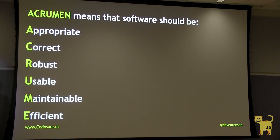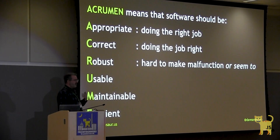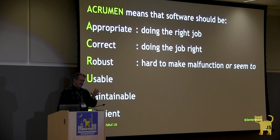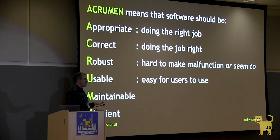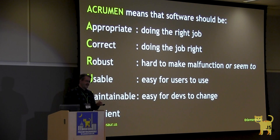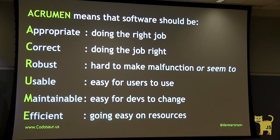What does all that mean? First, it needs to be doing what the stakeholders need it to do — in other words, do the right job. Then it needs to be doing that job correctly — do the job right. It should be hard to make the software malfunction or even seem to. On the other claw, it should be easy for the users to use and for the developers to change. And lastly, dead last — despite how much we developers tend to worship this — it should go easy on resources.